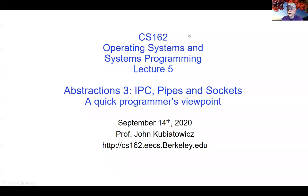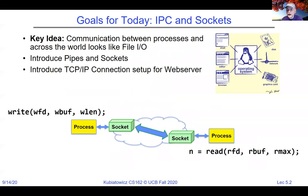Continuing our topics, we're going to talk a little more about the user's view of the system, so that when we really dive into details inside the operating system, you'll have a good clue why we're doing what we're doing. Today we're going to talk about communication between processes — we were talking about how to create them and how to create threads, but now we're going to talk about communicating between them. We're going to introduce pipes and sockets and TCP/IP connection setup for web servers, for instance.